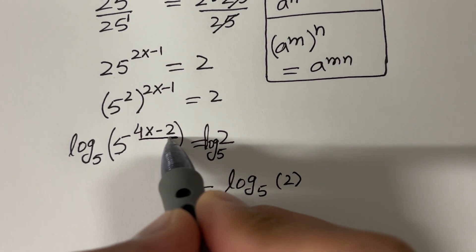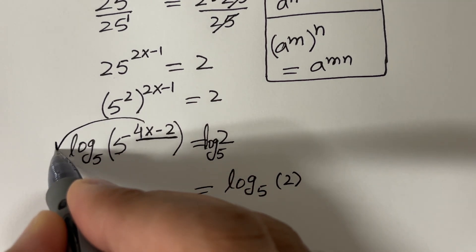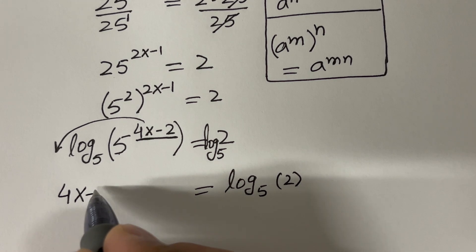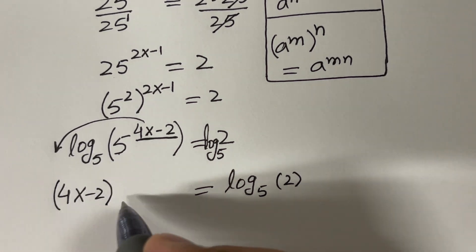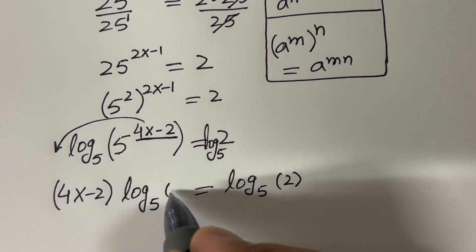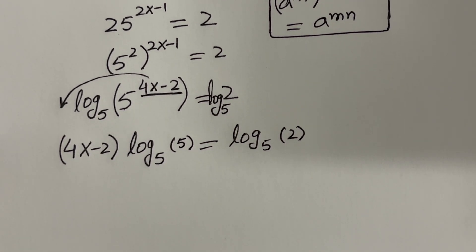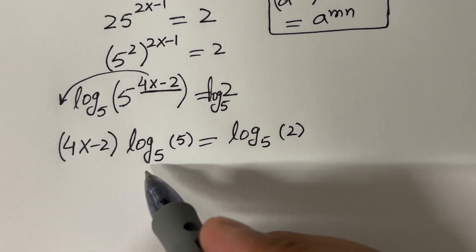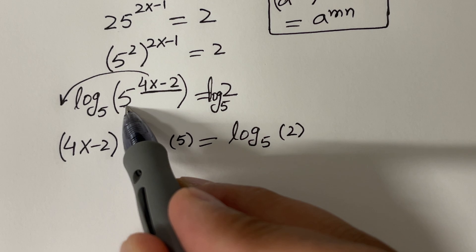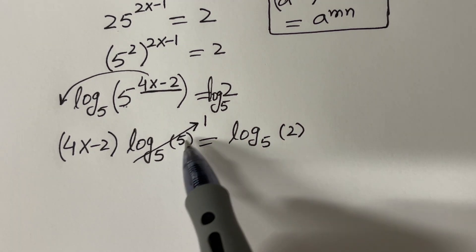Now there is a property of log that says you bring the exponent up front. Bring the exponent up front: that is 4x minus 2. And then you write whatever the base is — log base 5 of 5. The reason we took log base 5 is because we have base 5 here, so that we could get rid of this 5.